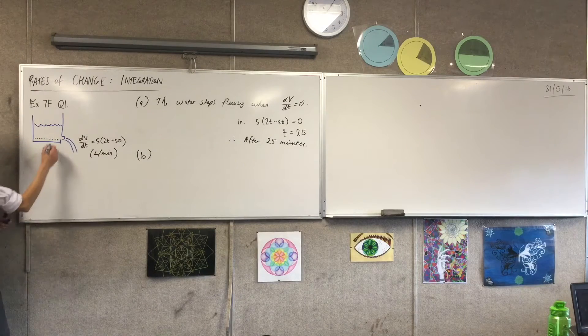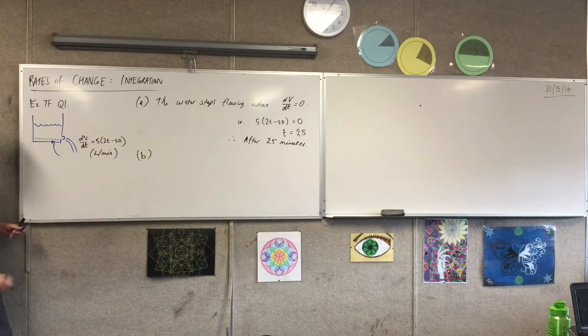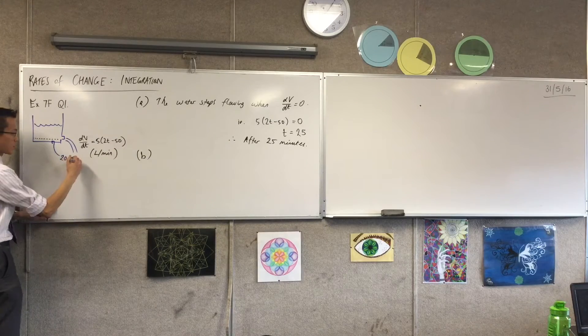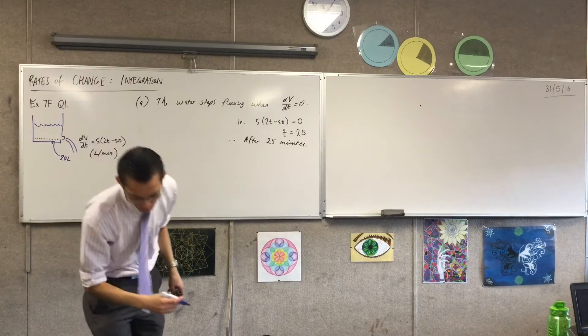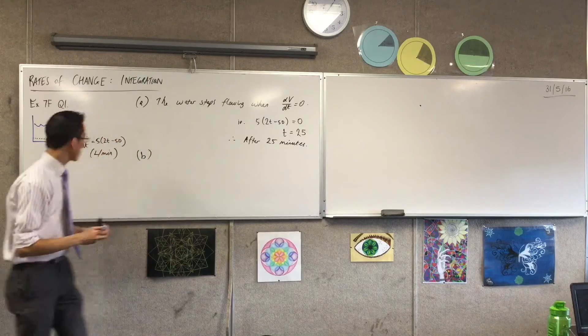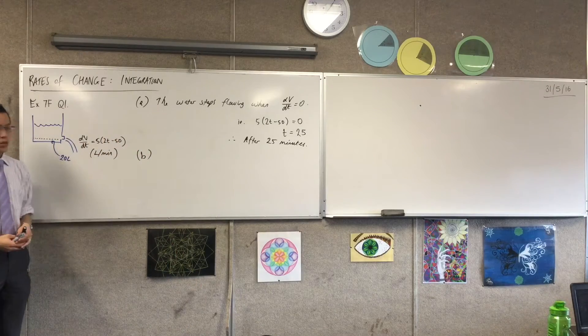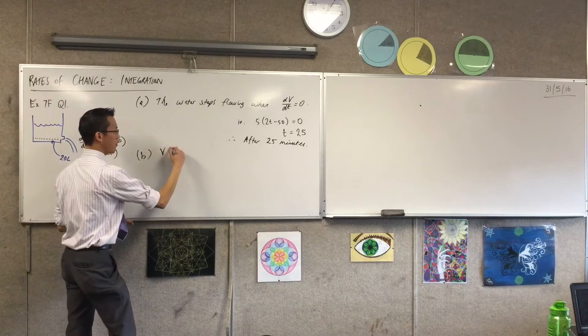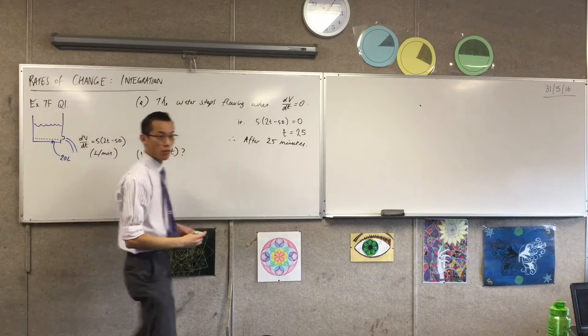Let's just imagine that this spot down the bottom here, this bit that won't, that refuses to flow out, let's call that 20 litres. Yeah, okay, so there's a little bit left. So how do I use this to find, I want volume as a function of time, volume as a function of time.